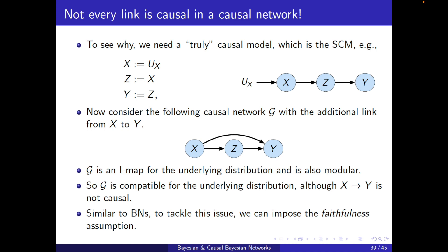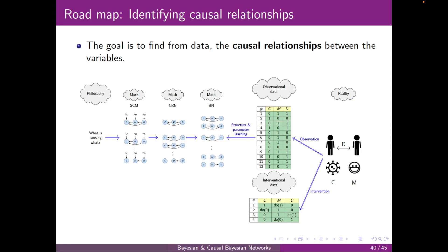If we want to make the link from observation to causality, there are some assumptions we need to make. Back to our roadmap: we defined SCMs, and from there we can define causal Bayesian networks. Causal Bayesian networks are also Bayesian networks. We already know how to learn a Bayesian network from observational data by structure and parameter learning. However, the direction from a Bayesian network to a causal Bayesian network is still unclear — is it even possible, and what do we need to get there?